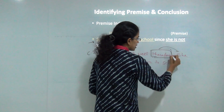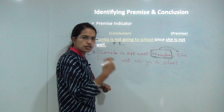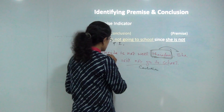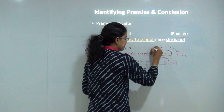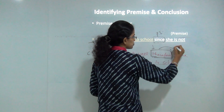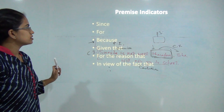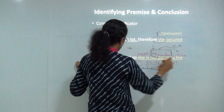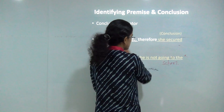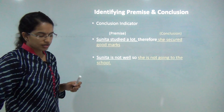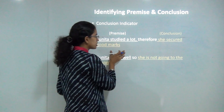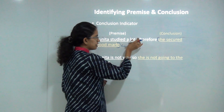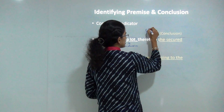The word 'therefore' helps you identify the conclusion that she is not going to school. Words like 'therefore,' 'hence,' 'so,' and 'henceforth' become words indicating conclusion. Whenever you are solving any mathematical question, at the end you say 'hence the answer would be' or 'therefore we reach the conclusion.' Here 'therefore' indicates 'she is not going to school' as the conclusion, while the remaining part stays as the premise.